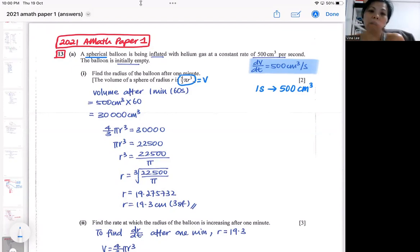So right now they are asking for the radius of the balloon after one minute. If you do not have the idea that every second I'm inputting this amount of volume, you will not be able to do the first part. So you will need to calculate how much volume is there after one minute. A minute is equivalent to 60 seconds, so you need to do 500 times 60 to get the volume after one minute.